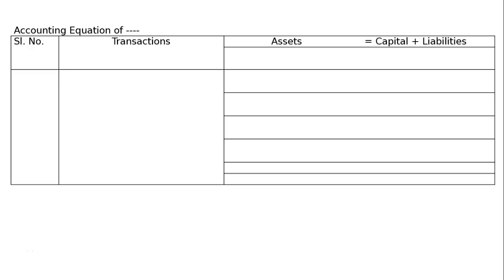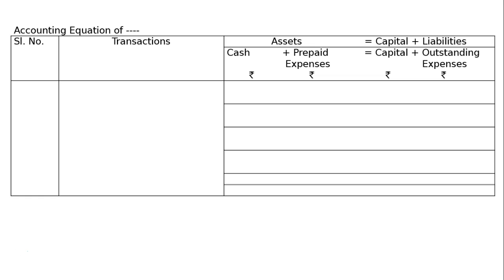This question asks to show the effect of the following transactions on the accounting equation. There are five transactions and the name of the person doing the business is not given. We will draw the format: accounting equation of a dash dash, with serial number, transactions, and asset equals capital plus liabilities. We will write assets and liabilities — cash, prepaid expenses, capital, and outstanding expenses — because wages outstanding and rent paid in advance are present. After writing the rupee symbol, we can start with the first transaction.